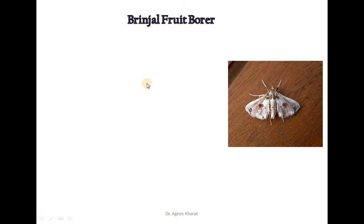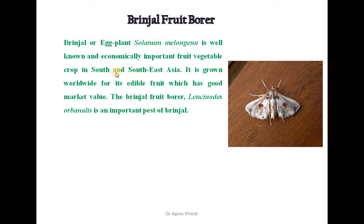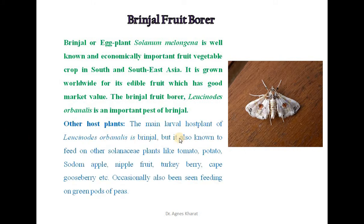The first insect pest is brinjal fruit borer. Brinjal or egg plant is a well-known and economically important fruit vegetable crop in South and Southeast Asia. It is grown worldwide for its edible fruit, which has good market value. The brinjal fruit borer, Leucinodus orbonalis, is an important pest of brinjal. Its main larval host plant is brinjal, but it is also known to feed on other solanaceous plants like tomato, potato, sodom apple, nipple fruit, turkey berry, and cape gooseberry, and has occasionally been seen feeding on green pods of peas.